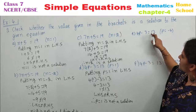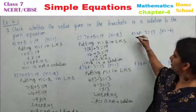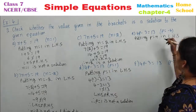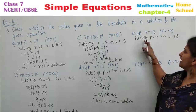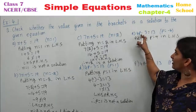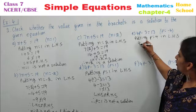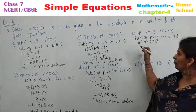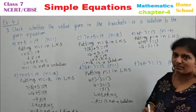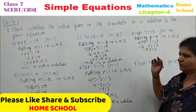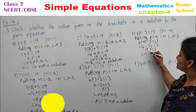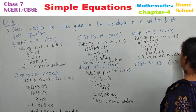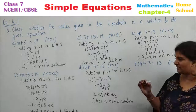E problem: 4p minus 3 equals 13, with p equal to minus 4. Putting p equal to minus 4 in LHS: 4 times (minus 4) minus 3 — plus times minus gives minus, so 4 fours are 16; minus 16 minus 3 equals minus 19. Minus 19 is not equal to 13. Therefore, LHS is not equal to RHS, and p equals minus 4 is not a solution of the given equation.